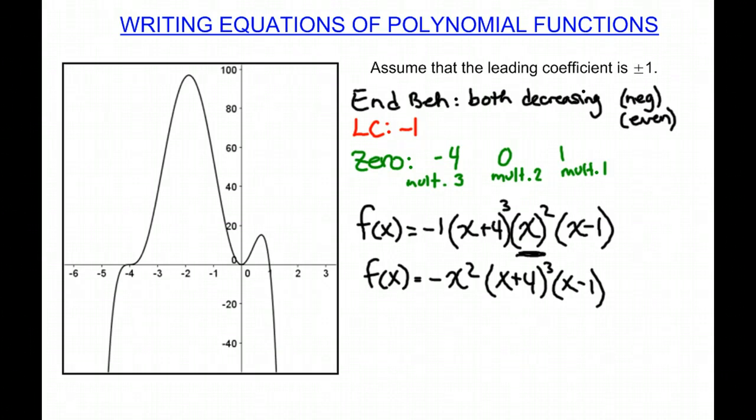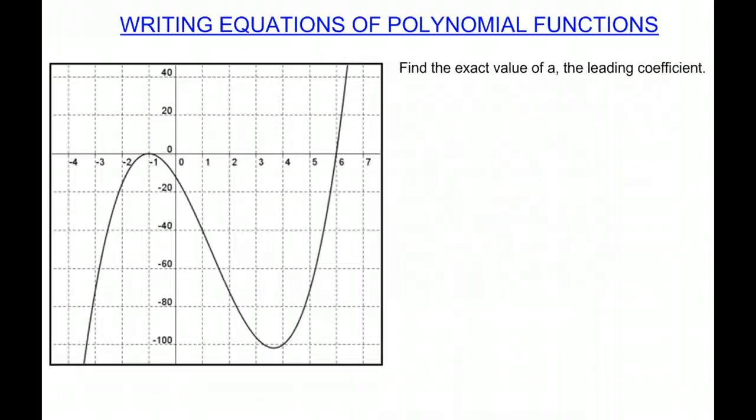Now there are two types of equations that you can do, assuming the leading coefficient is positive or negative 1, and actually finding the leading coefficient. So this next example, we have to write the equation, but we have to find the exact value a. So we start with our end behavior.